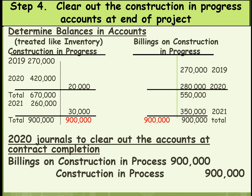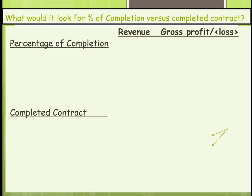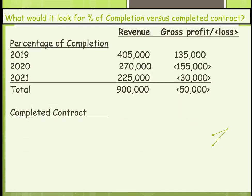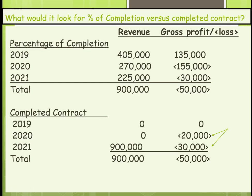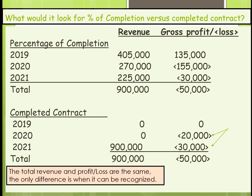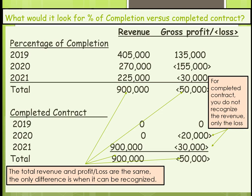What does this look like in terms of recording revenue versus profit or loss between the two methods? For percentage of completion, you book revenue and then book the loss each year. For completed contract, remember: no revenue — only the loss. When doing homework, if it says a contract does not qualify for percentage of completion, you cannot book any revenue, only the loss. That ends the last section for revenue recognition.